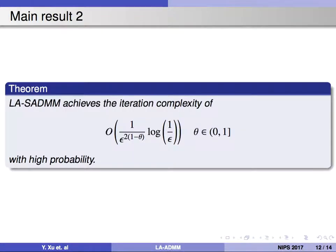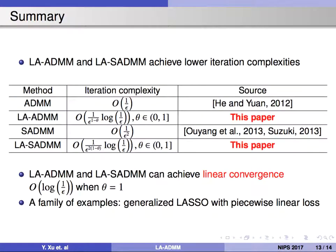Also, we can show that LA-ADMM achieves an improved iteration complexity. Here is a summary. The proposed ADMMs enjoy lower iteration complexities both for deterministic setting and stochastic setting. In addition, both LA-ADMM and LA-SADMM can achieve linear convergence for some applications. For example, generalized lasso with piecewise linear loss.